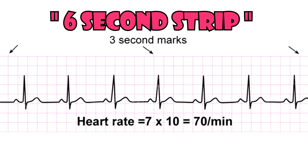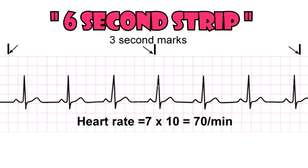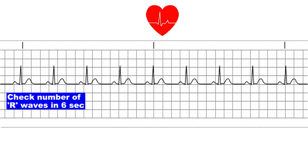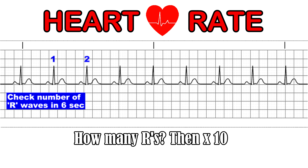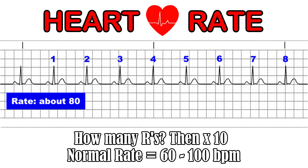It's important to know that whenever you interpret EKGs, you want to make sure that you're looking at a six-second strip. There are markers above the EKG paper, and from one marker to the next is three seconds. The third step is to look at a six-second strip and count how many R waves you have, then multiply by 10. In this case we have 8, so 8 times 10 is 80. It's also important to note that a normal rate is between 60 to 100 beats per minute.